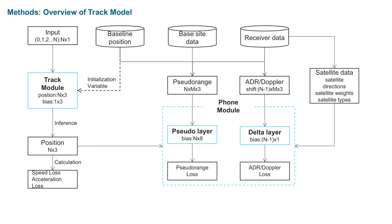Here is the overview of my track model. It is a neural network model with two main modules: the track module and the phone module. They take all the points on a track as inputs and optimize them globally. The track module is a layer containing position variables. They are initialized by baseline results and updated using gradient descent algorithms. The outputs of the track module together with the data from base sites and user receivers are fed into the phone module to calculate the losses.